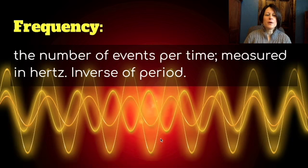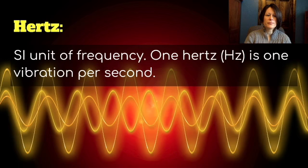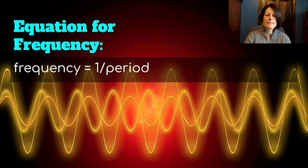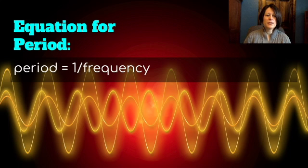Another thing we talk about with waves is frequency — the number of events per time, measured in hertz, and it's the inverse of period. Hertz is the SI unit of frequency, and one hertz is one vibration per second. The equation for frequency is: frequency equals one over period. And the equation for period is: period equals one over frequency.